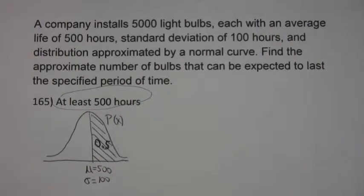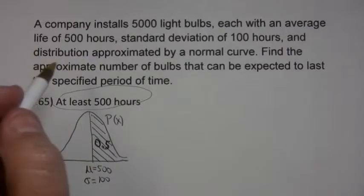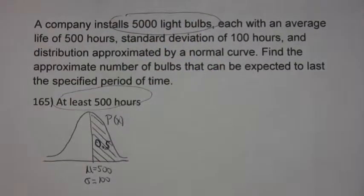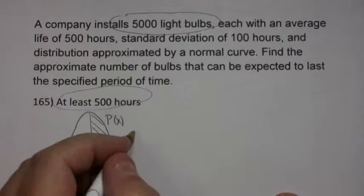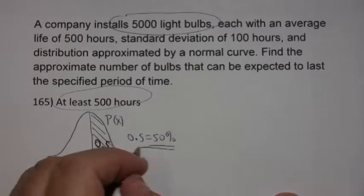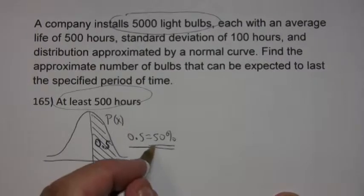So really, the easiest way is to say half of the area is to the right, that means half of the bulbs are going to last that long. So we have 5,000 light bulbs and 50% of them—remember 0.5 is 50%—half of them last that long.